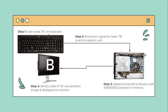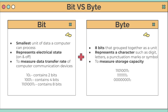Here's how it works: when a user presses 'B' on a keyboard, an electronic signal for the letter B is sent to the system unit in the CPU. Those signals are converted to binary code and stored in memory. Then the binary code of B is converted to an image and displayed on the monitor. Now let's look at bit versus byte. A bit is the smallest unit of data a computer can process.